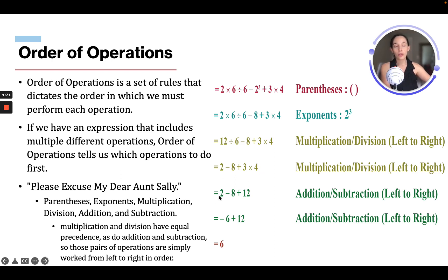So now we get 2 minus 8 plus 12. And then we add negative 6 plus 12. And then we get 6. So that's kind of the steps for order of operations.